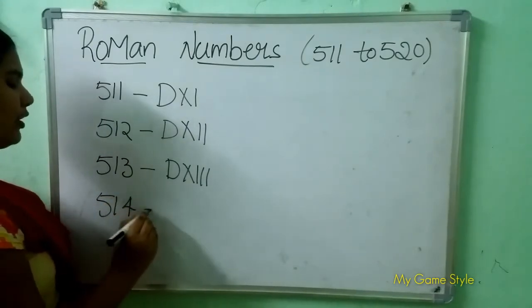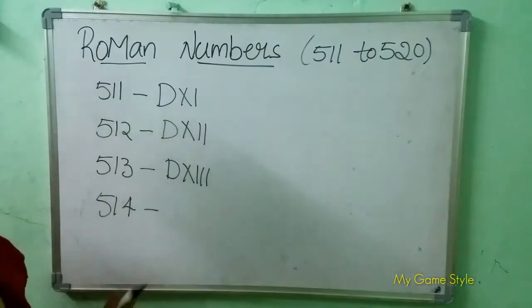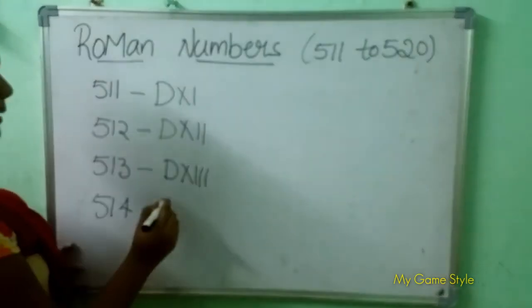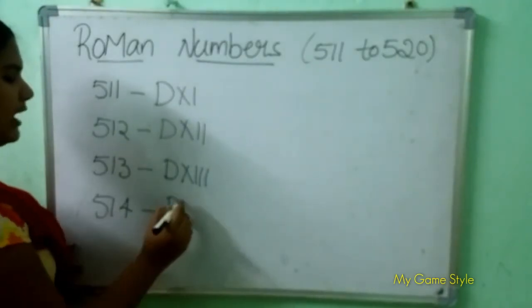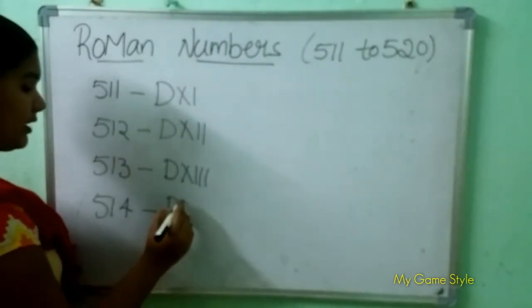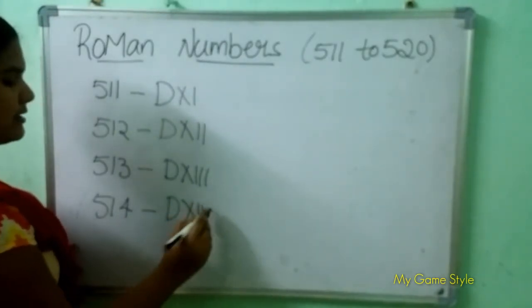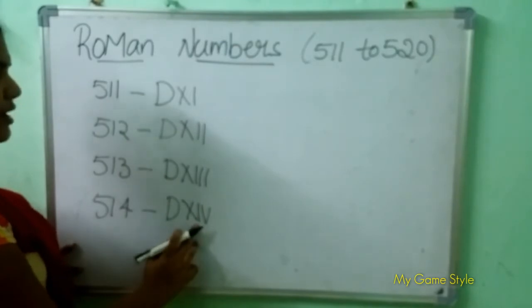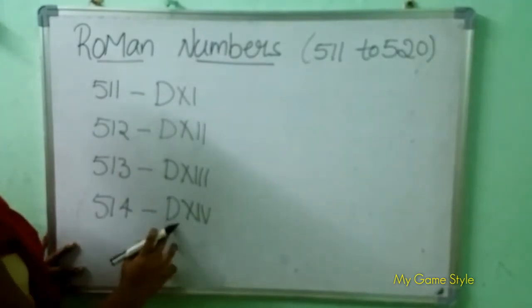514 means 514. So how to write here? D is 500. XIV is 14. So this means 514.